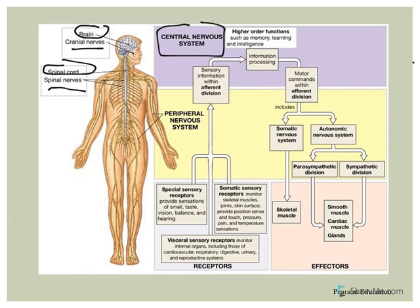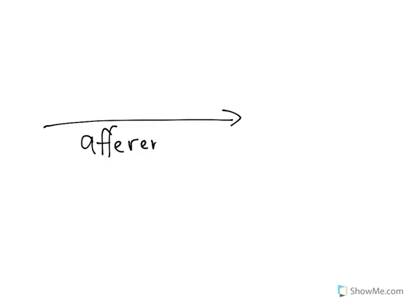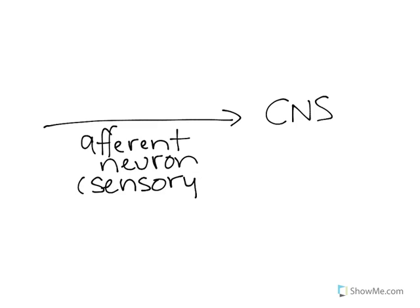The general functions of the nervous system include a sensory function. Sensory information is carried along what is referred to as the afferent pathway — the 'A' in afferent because the information is going towards the central nervous system. This information is carried along afferent neurons, which are also referred to as sensory neurons, and I use those terms interchangeably.